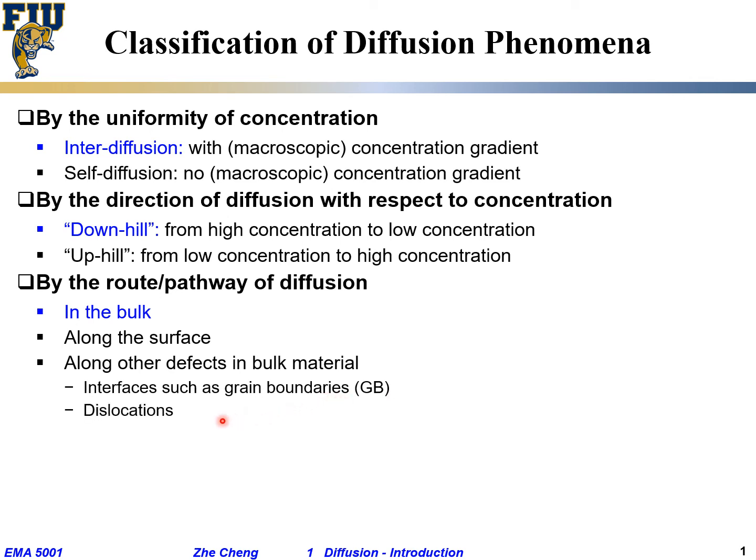Diffusion may also occur along dislocations — hopefully you are familiar with dislocations, which are so-called linear or one-dimensional defects within crystalline material. There is edge dislocation, screw dislocation, or other mixed dislocations. Atoms, ions, or other species may move along these linear, one-dimensional defects called dislocations to achieve, again, mass transport.